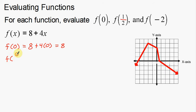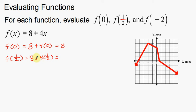The same thing with f of one half. In this case, instead of plugging in a zero, we're going to plug in one half, so four times one half. Four times a half — or half of four — is going to be two. So this is eight plus two, which is equal to ten. All this really means is in the function f we're going to plug in one half, so instead of plugging in x, we plug in one half.